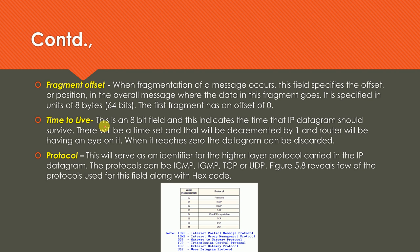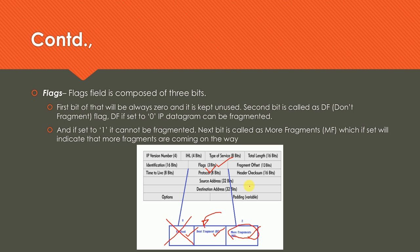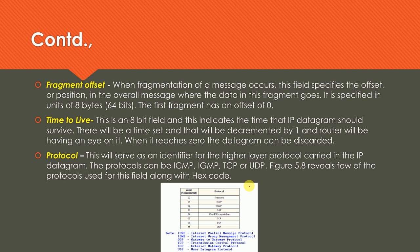Time to Live (TTL) defines how long an IP datagram should remain alive floating in the network — this is a common interview question. The protocol field indicates which support protocol is being used alongside IP, such as ICMP (value 01), IGMP (value 02), TCP, or UDP. The specific numeric value for each protocol must be clearly stated in the packet header.